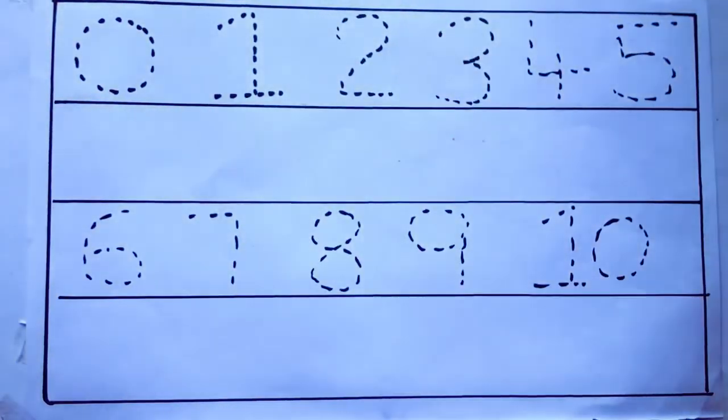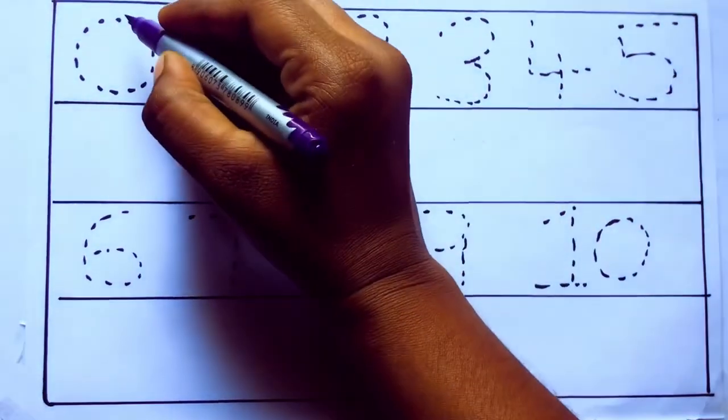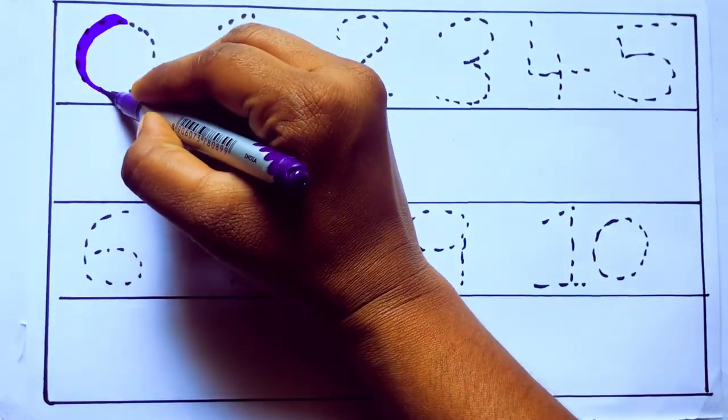Let's draw numbers. Violet color 0, Z-E-R-O.